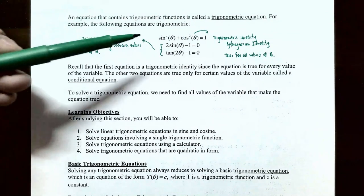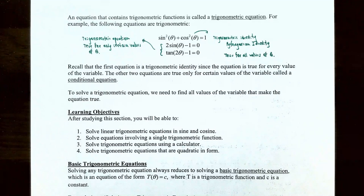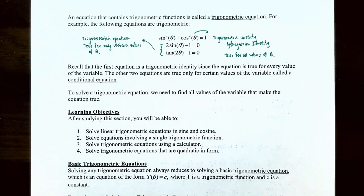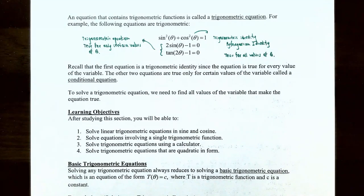For any value of theta, sine squared of theta plus cosine squared of theta will always equal one. However, the last two statements are actually trigonometric equations — they're only true for certain values of theta. So 2 times sine of theta minus 1 equals 0, and tangent of 2θ minus 1 equals 0, are only true for certain values of theta, not all values. These are called conditional equations.